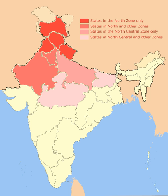North India lies mainly on continental India, north of peninsular India. Towards its north are the Himalayas, which define the boundary between the Indian subcontinent and the Tibetan Plateau. To its west is the Thar Desert, shared between North India and Pakistan, and the Aravalli Range, beyond which lies the state of Gujarat. The Vindiya Mountains are, in some interpretations, taken to be the southern boundary of North India.